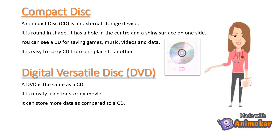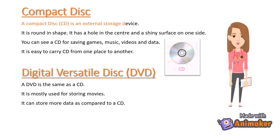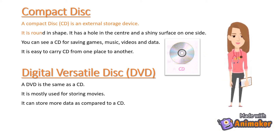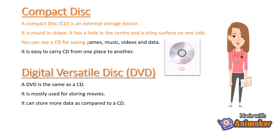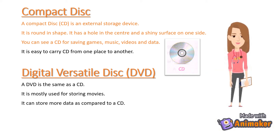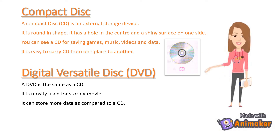Compact disk: A compact disk (CD) is an external storage device. It is round in shape. It has a hole in the center and a shiny surface on one side. You can use a CD for saving games, music, videos and data. It is easy to carry a CD from one place to another.